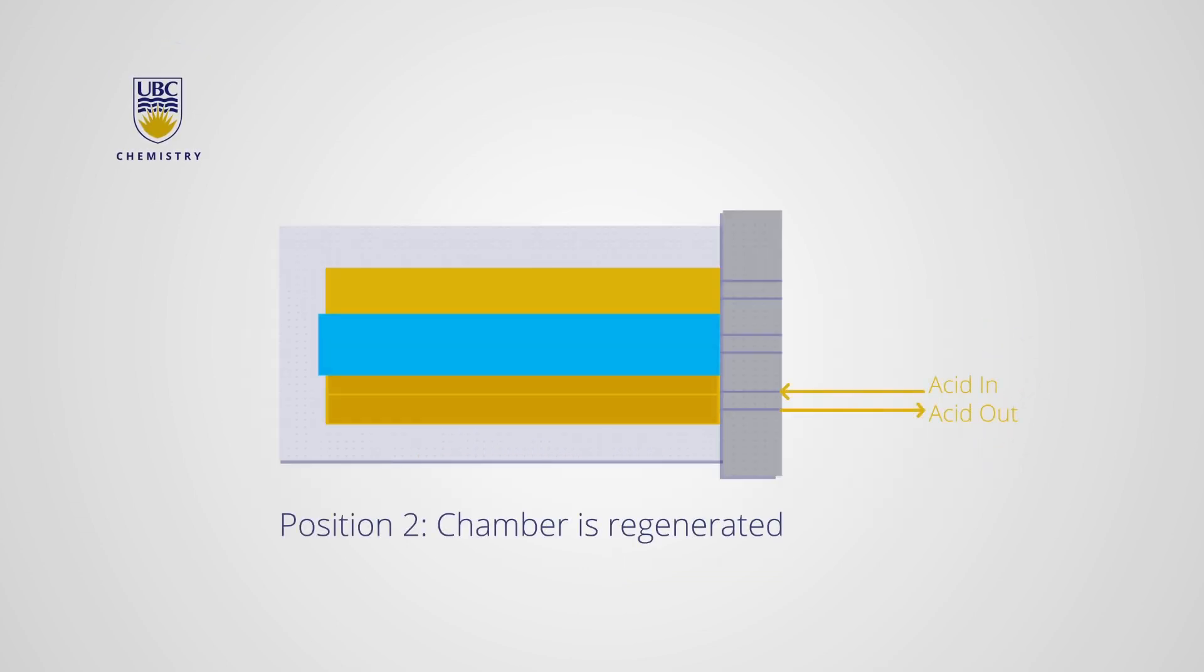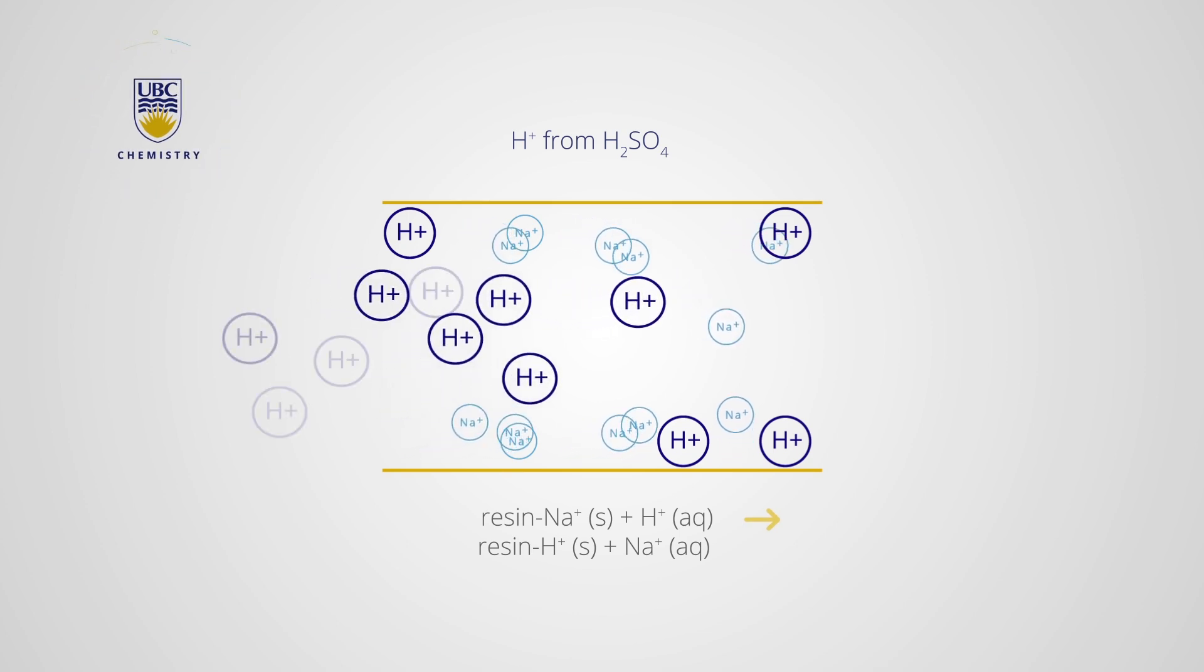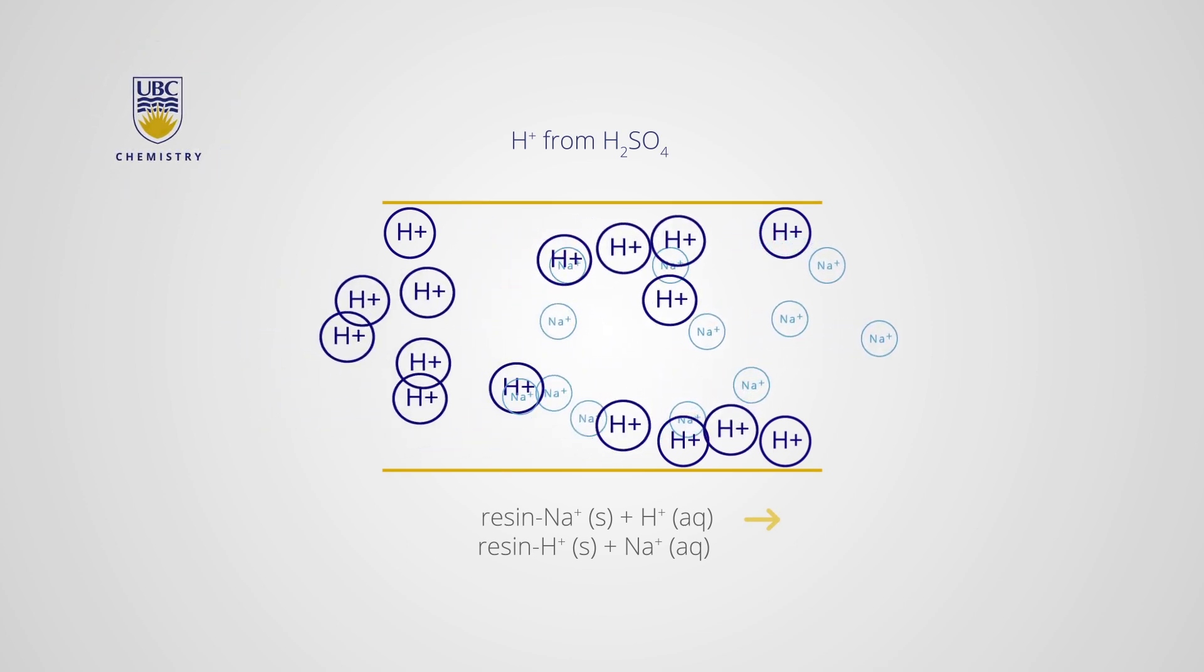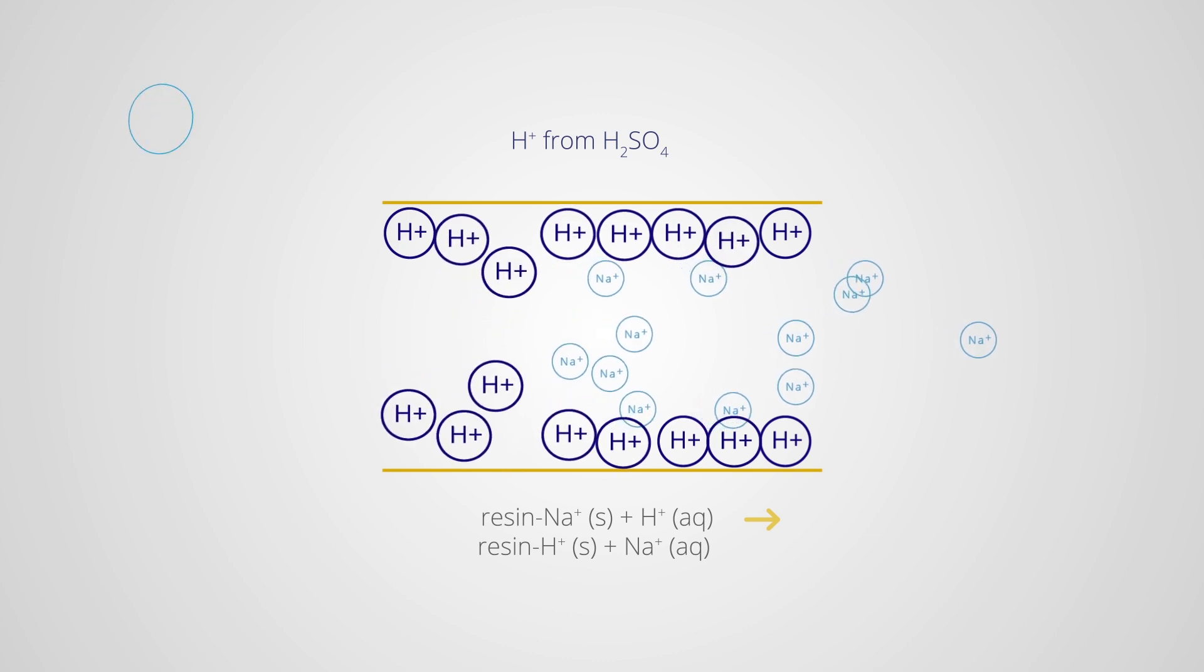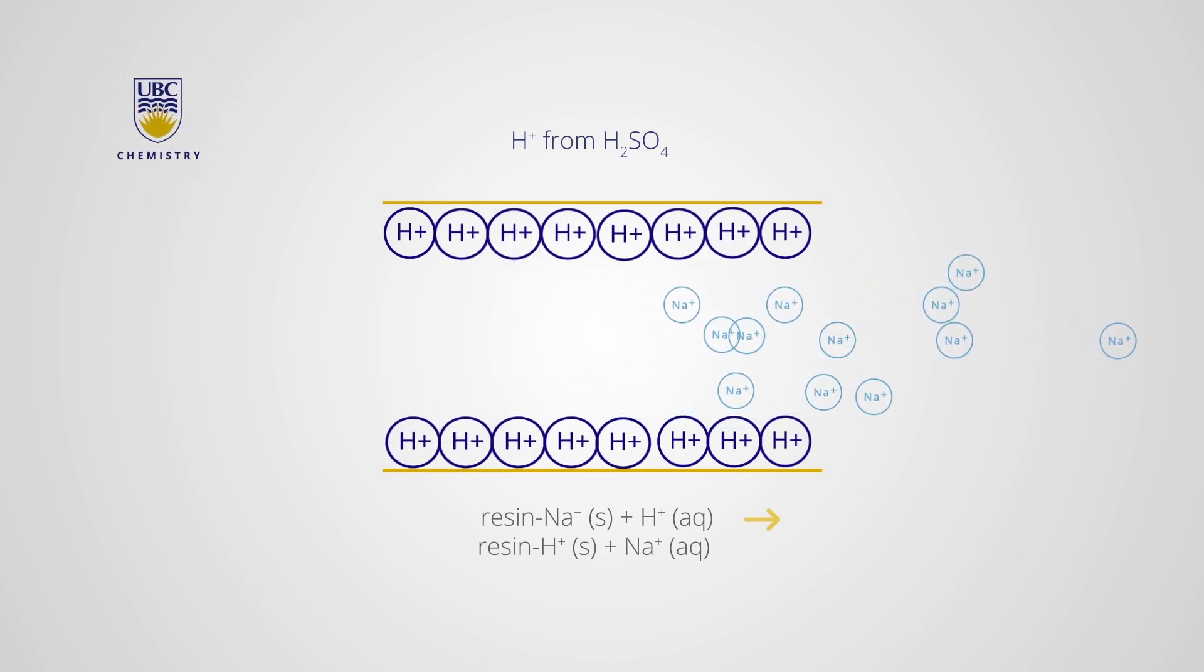Once the conversions are complete and the analyte anions are detected, the next step in the suppressor sequence commences. In the second step, the chamber moves to its next position, where it is subjected to a regenerating solution of sulfuric acid. A proton from the sulfuric acid replaces the sodium cation on the cation exchange resin. This allows for the resin to be transformed back to its original form.